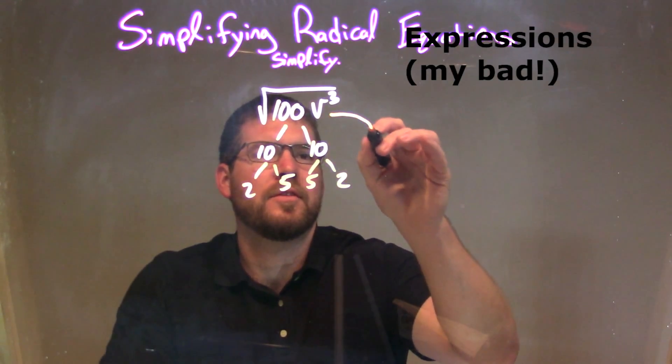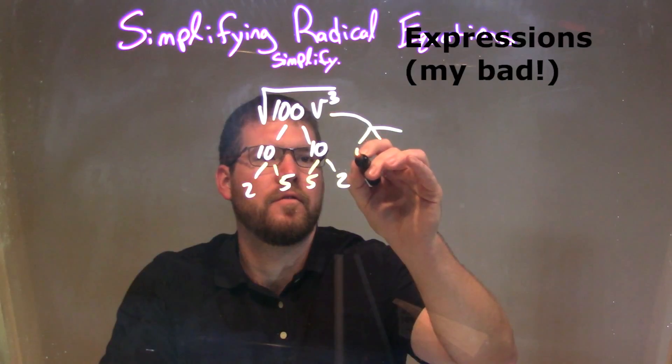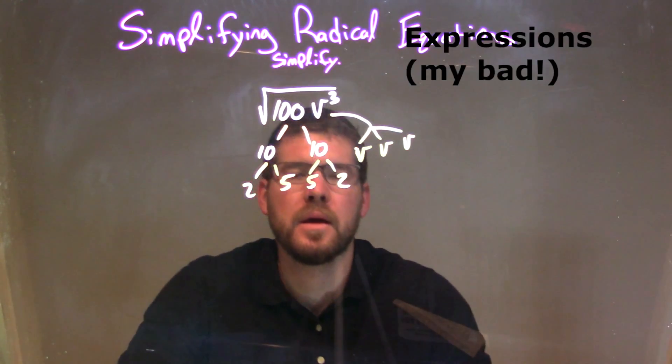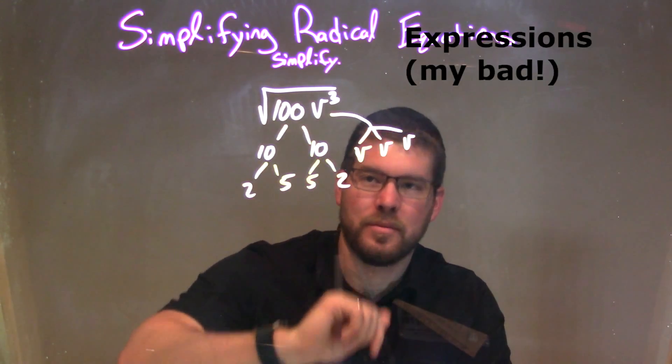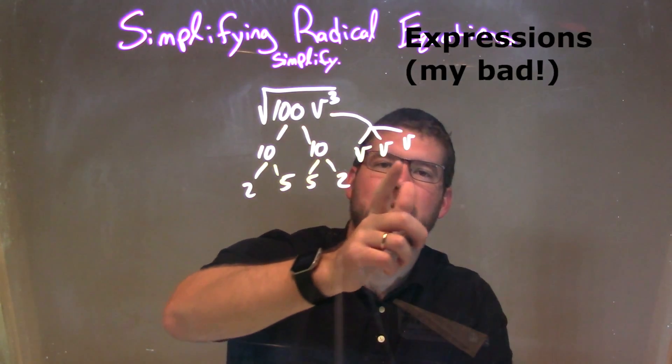v to the third power is just v times v times v, okay? So now we have our prime factorization. 100 is 2 times 5 times 5 times 2, and v to the third power is v times v times v.